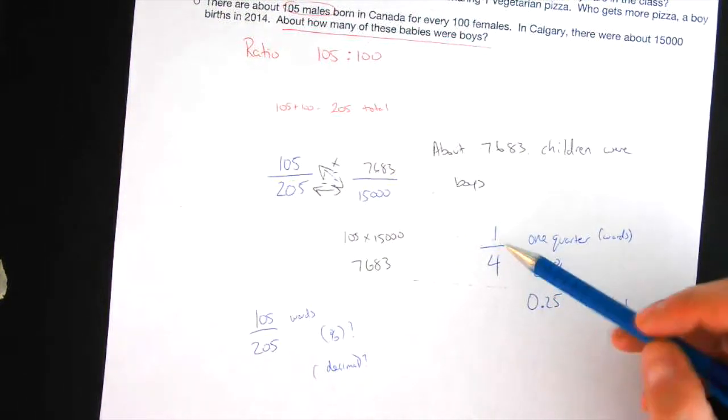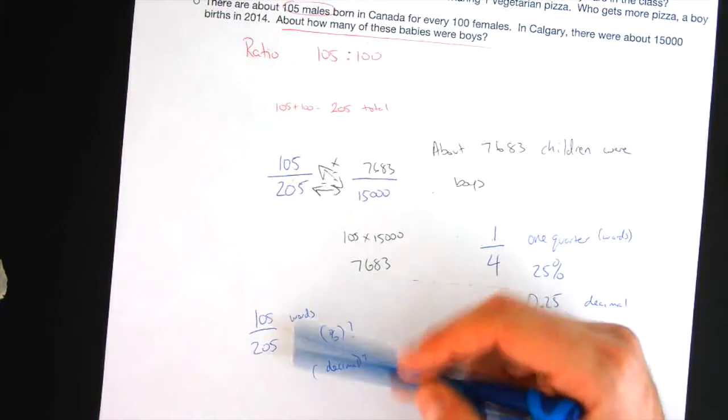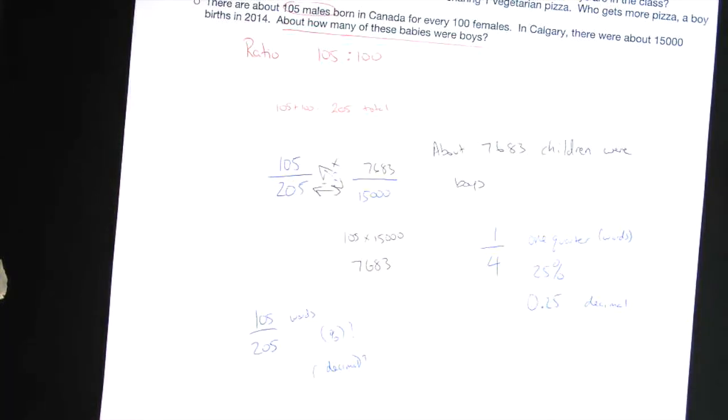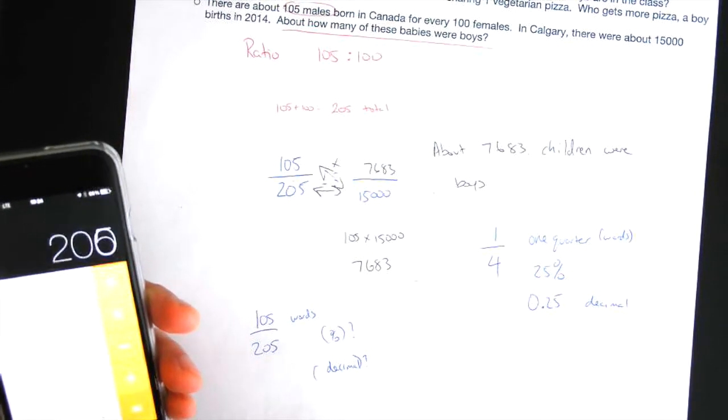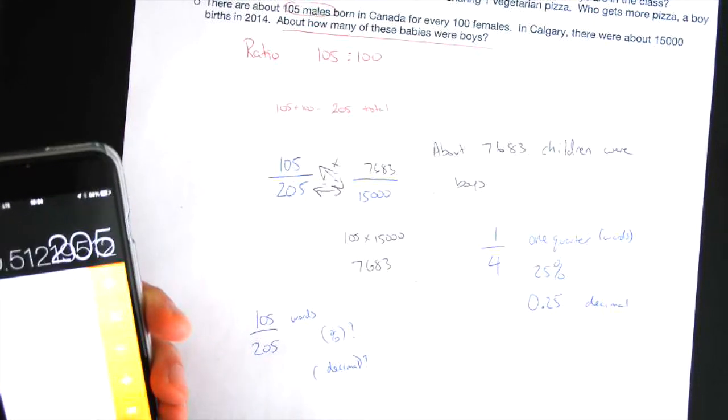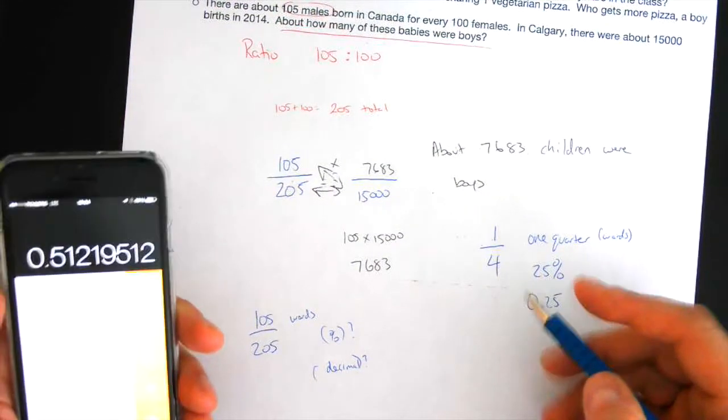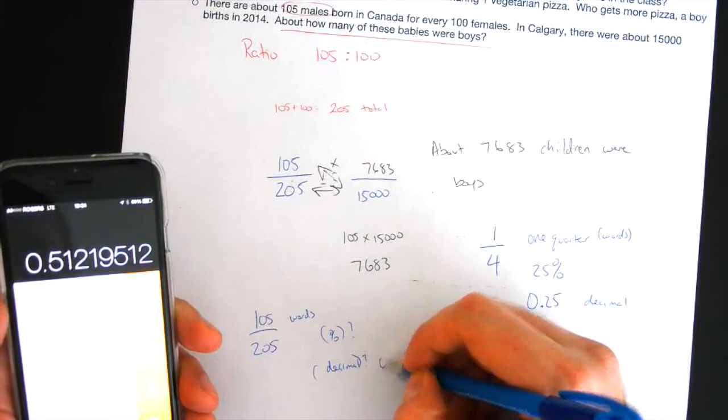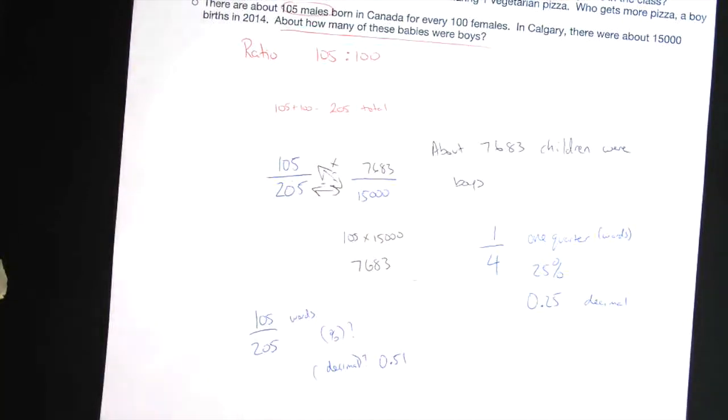What do you have to do to figure out the decimal? Tyron? Tyron? 105 divided by 205. Let's do it right this time. Look at that. It gives us odd decimal. Zero decimal five one. So, if the decimal is 0.51, what is the percent? You should. 51%.